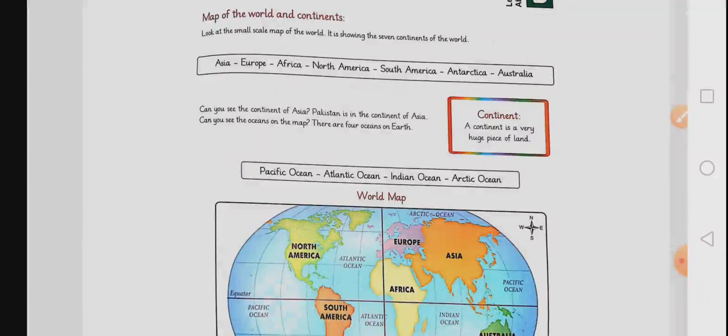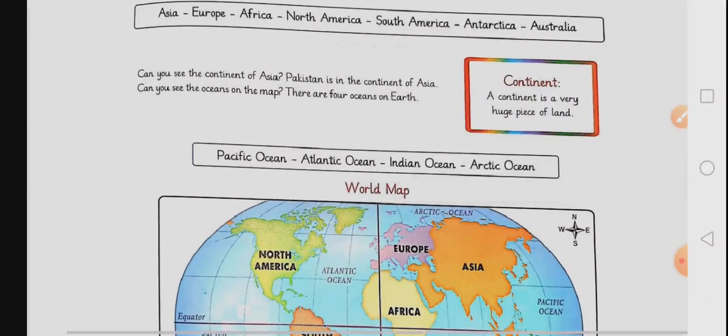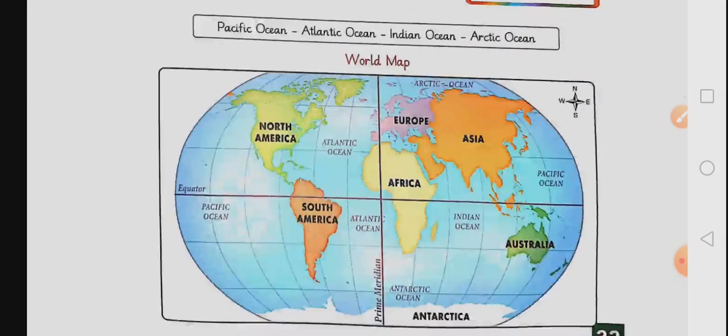Today we are going to read two examples that will further clarify the concept. Please have a look at the topic: map of the world and the continent. Look at the small scale map of the world. It is showing the seven continents of the world. And here is the picture of the world map.